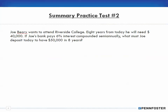Problem two: Joe Barry wants to attend Riverside College eight years from today. He will need $40,000, but his bank pays six percent interest compounded semi-annually. What must Joe deposit today — a present value — to have $50,000 in eight years? So the $50,000 is the future value here.